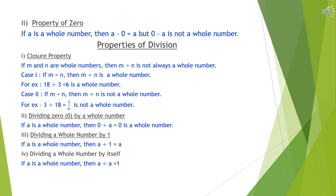Now, properties of division. First, closure property. If m and n are whole numbers, then m divided by n is not always a whole number. Two cases arise. Case one: if m is greater than n, then m divided by n is a whole number. For example, 18 divided by 3 equals 6, which is a whole number. Case two: if m is less than n, then m divided by n is not a whole number. For example, 3 divided by 18 equals 1 over 6, which is not a whole number.